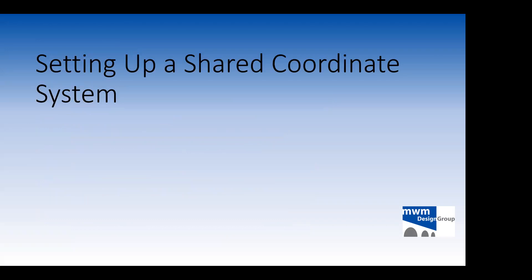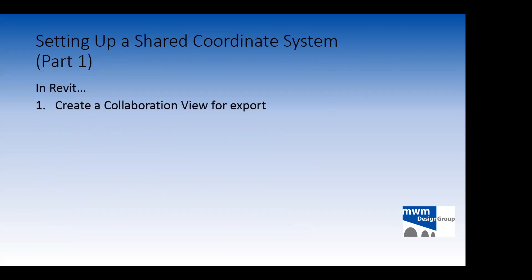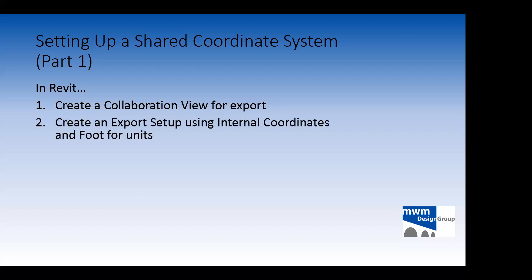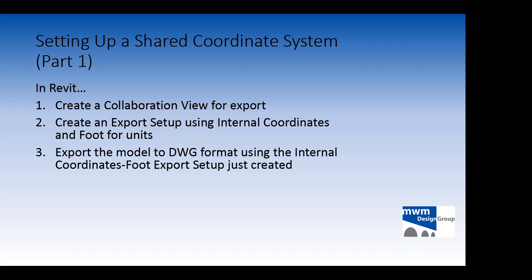We'll start with setting up a shared coordinate system. Part one, we're going to do in Revit. In Revit, we create a collaboration view for export — basically a site plan with certain things turned on and off — so that when we bring it into our CAD drawing file, we can position it in relation to the existing boundary or other content. We'll create an export setup that uses internal coordinates and feet for units, then export that model to DWG format using that export setup.